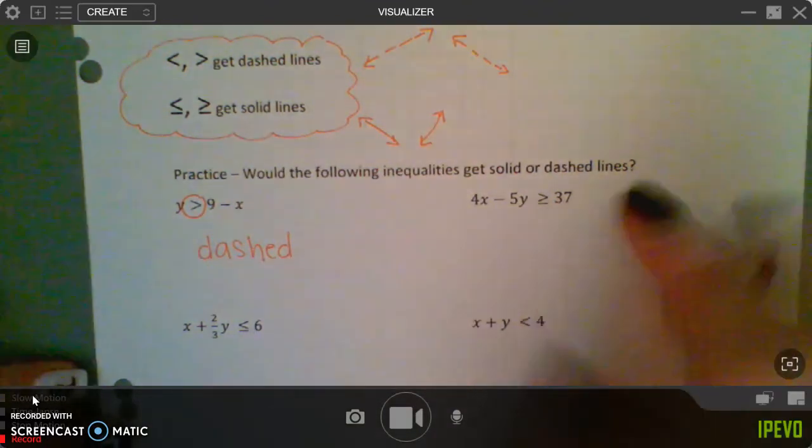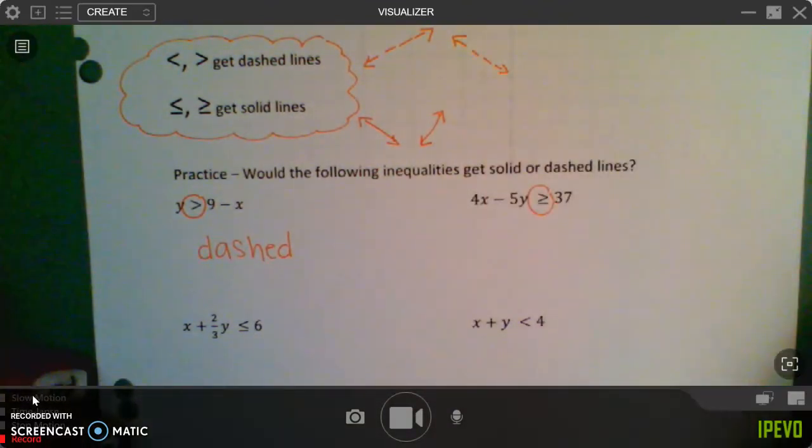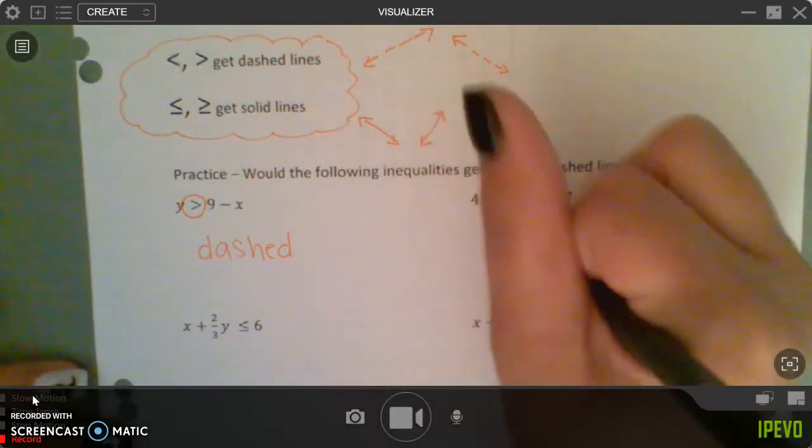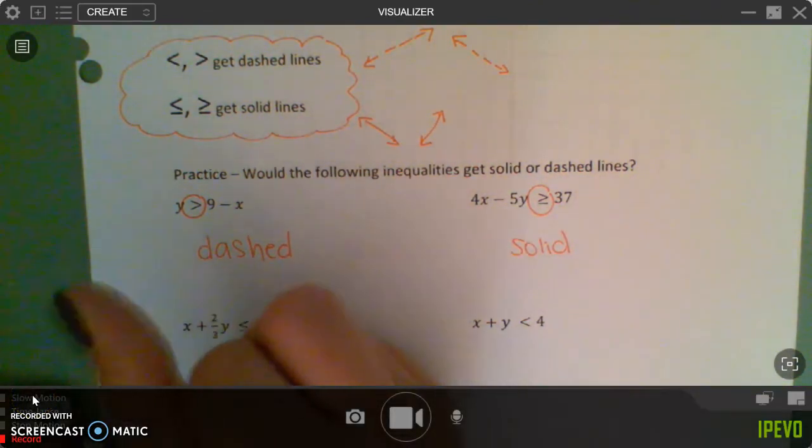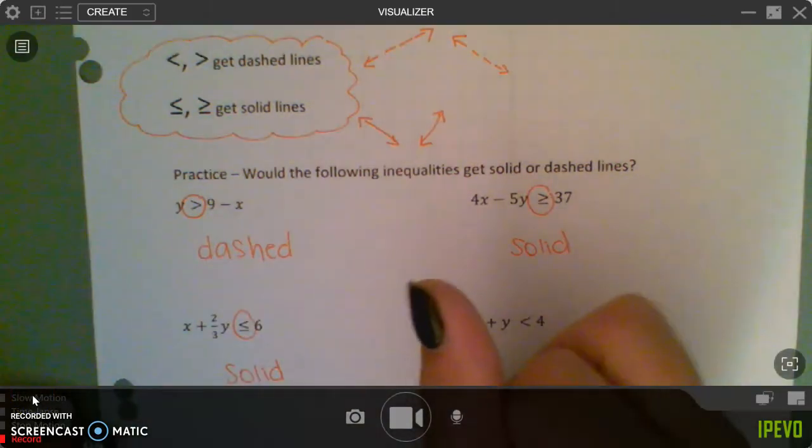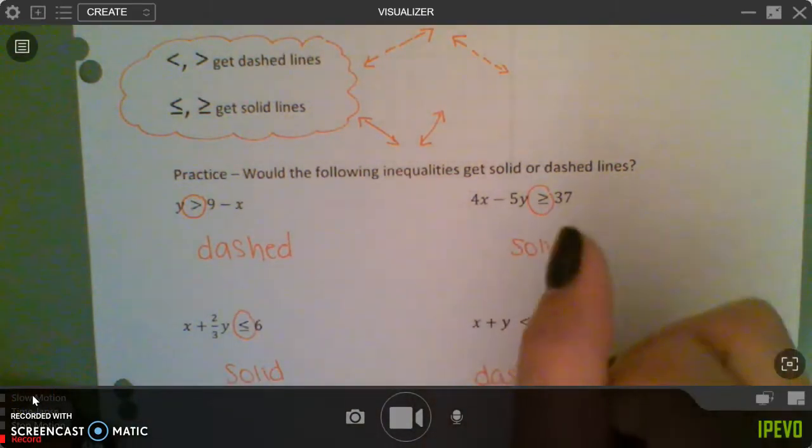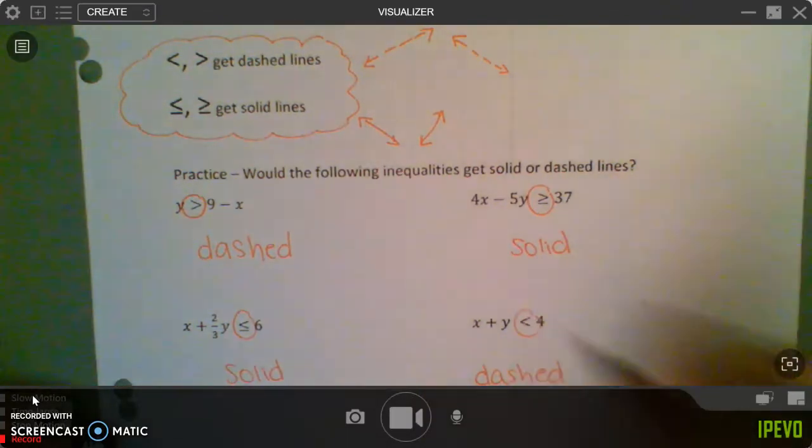This inequality symbol has a line, so solid. Go ahead and pause this video and try these two down here real quick. So you should have figured out that this one is solid because it has the line, and this one is dashed because it has no line on it.